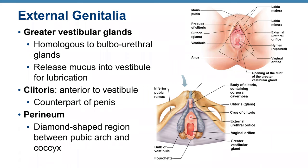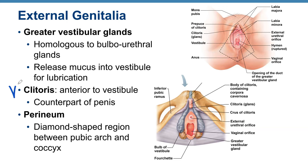The clitoris is located anterior to the vestibule and is the homologous counterpart of the penis. The perineum is the diamond-shaped region between the pubic arch and the coccyx, the same as in male anatomy.